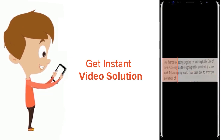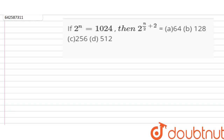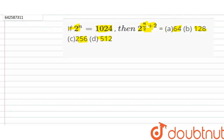The question is: if 2 to the power n equals 1024, find the value of 2 to the power n by 2 plus 2. The options given are 64, 128, 256, and 512.